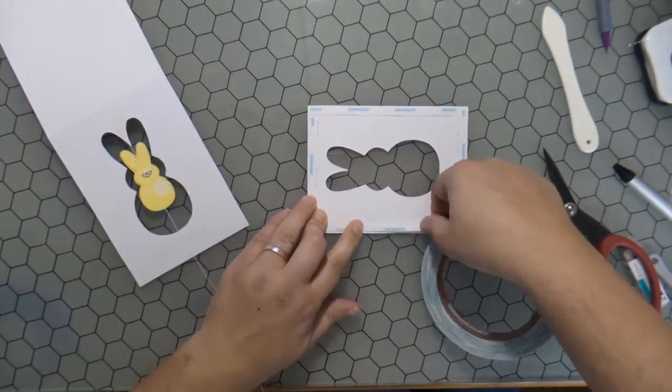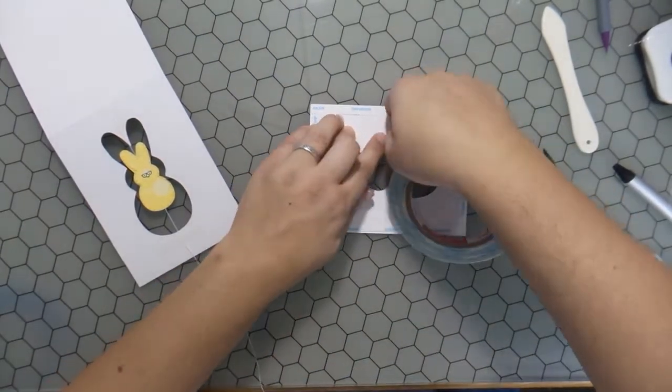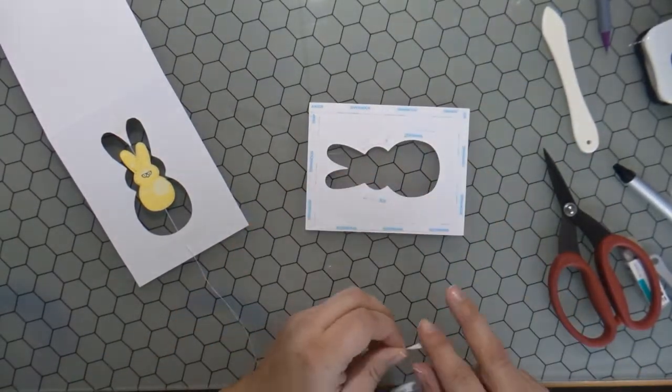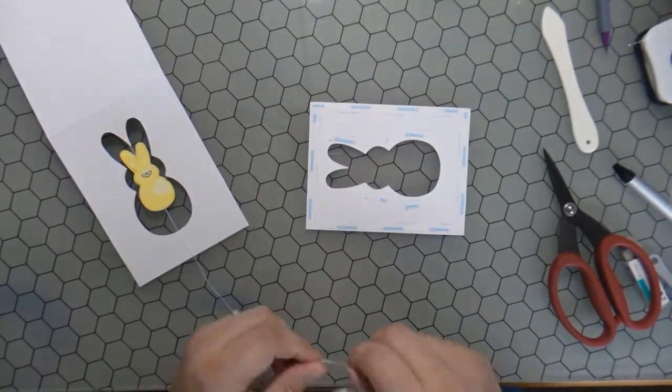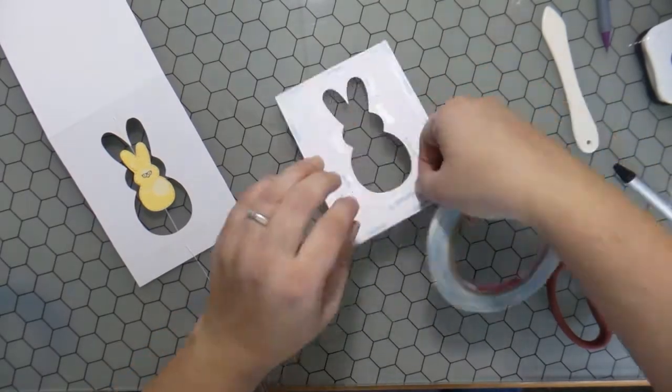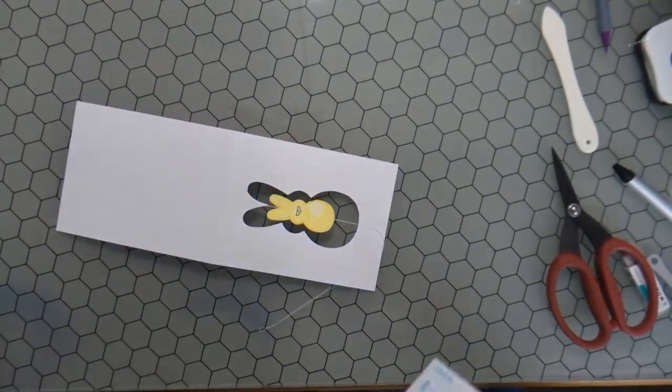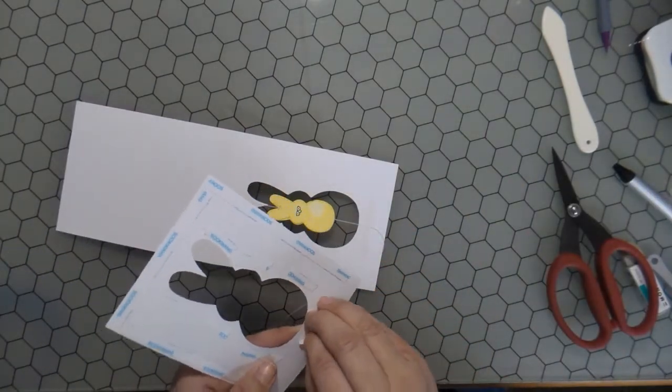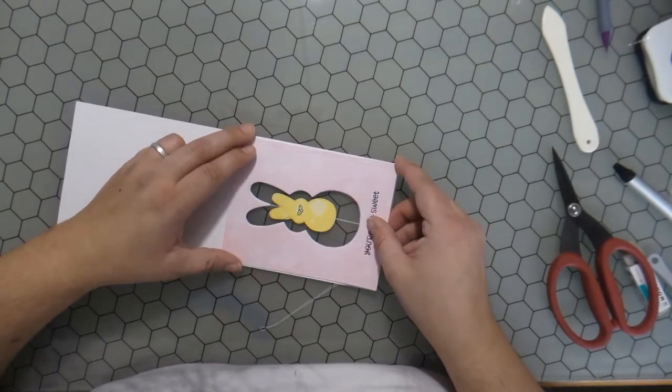I'm going to go ahead and stick a whole bunch of score tape all over the backside of my pink panel so that I can adhere it right on top of this. I want to go as close to the outline of that bunny as I can so that I don't have any gaps popping up.